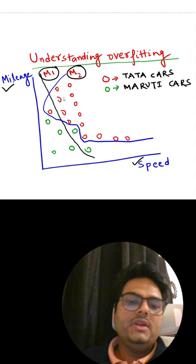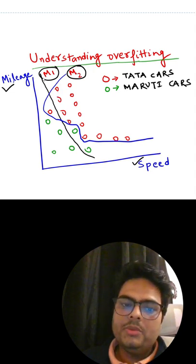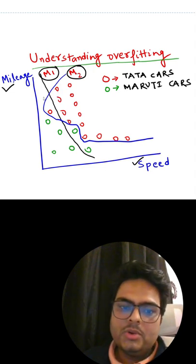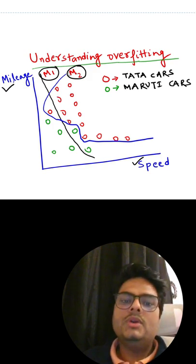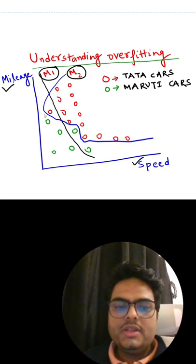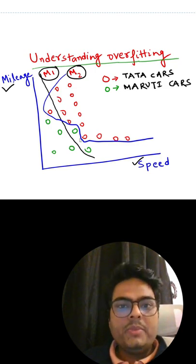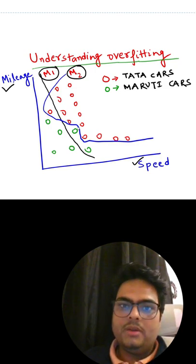Now if you observe carefully, the m1 model is a simple model, just a simple line kind of model, whereas the m2 model is a complex model which is trying to learn the pattern in such a way that it negatively impacts the performance of the model.